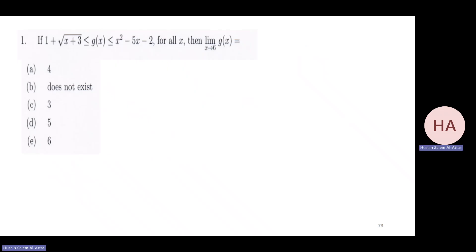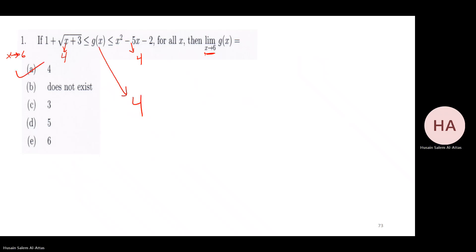Now using the squeeze theorem: as x goes to six, the first expression goes to one plus six equals seven, the square root of nine is three so that part goes to four, and thirty-six minus thirty minus two also goes to four. So for sure this one also goes to four. Very easy application.